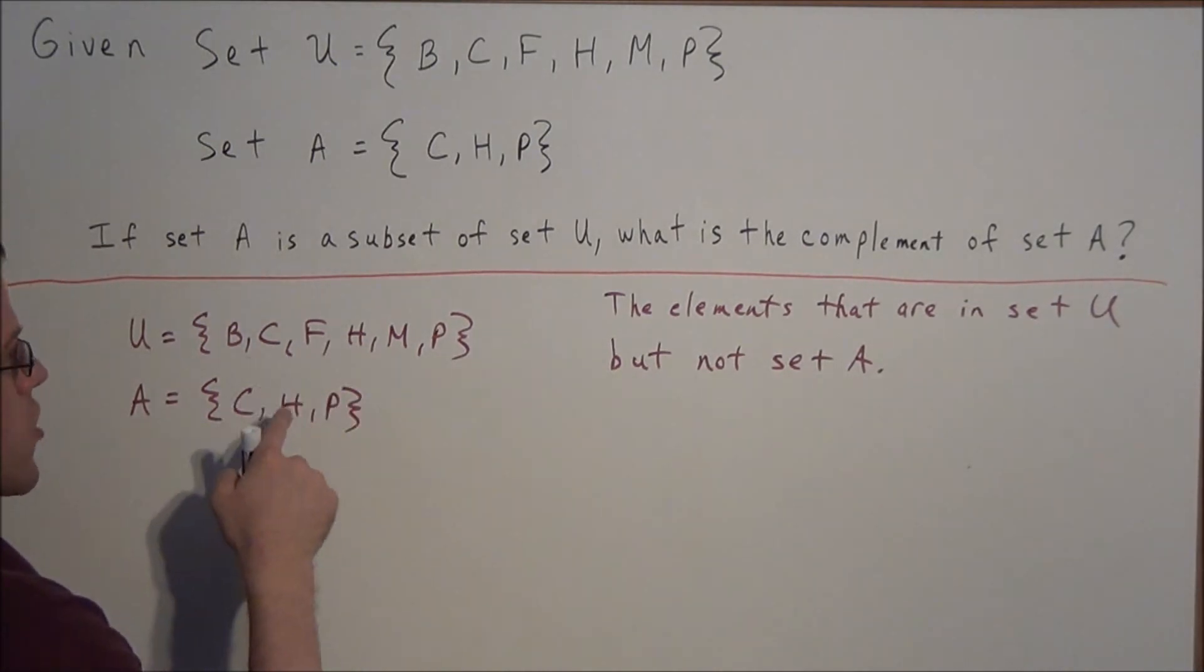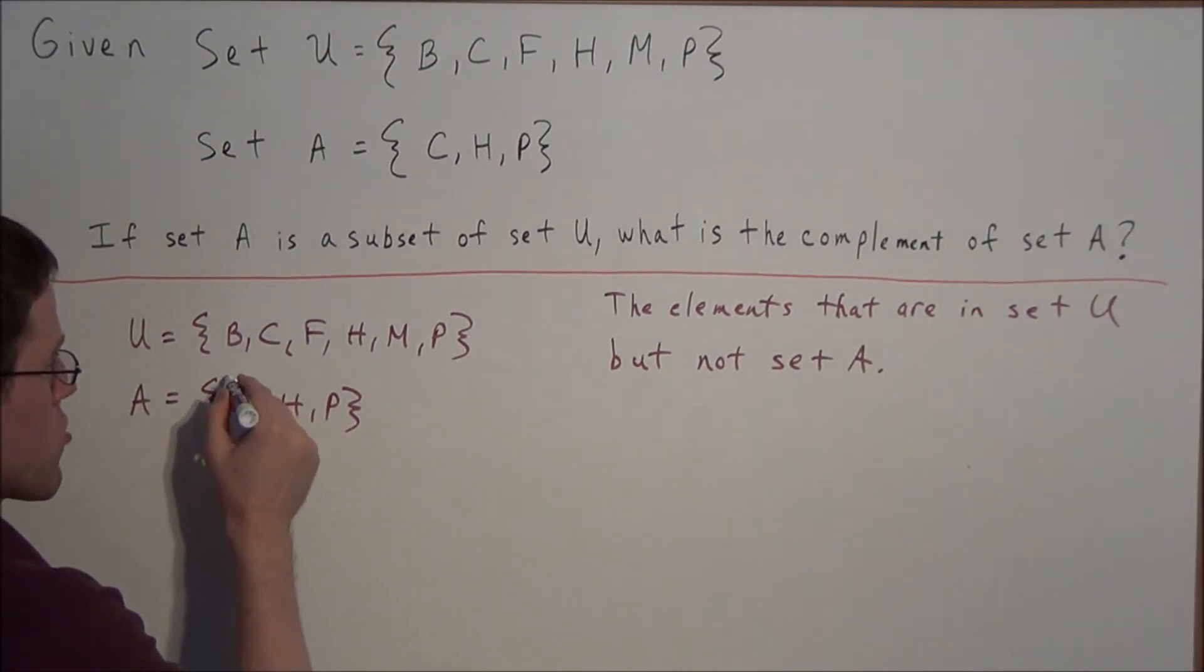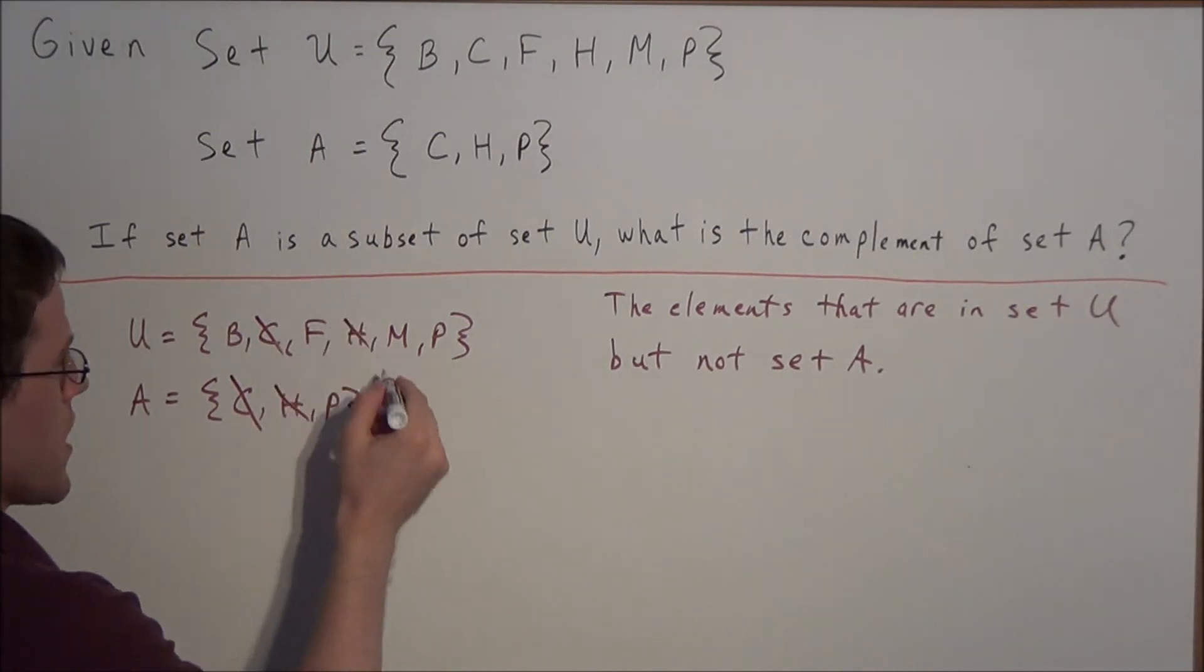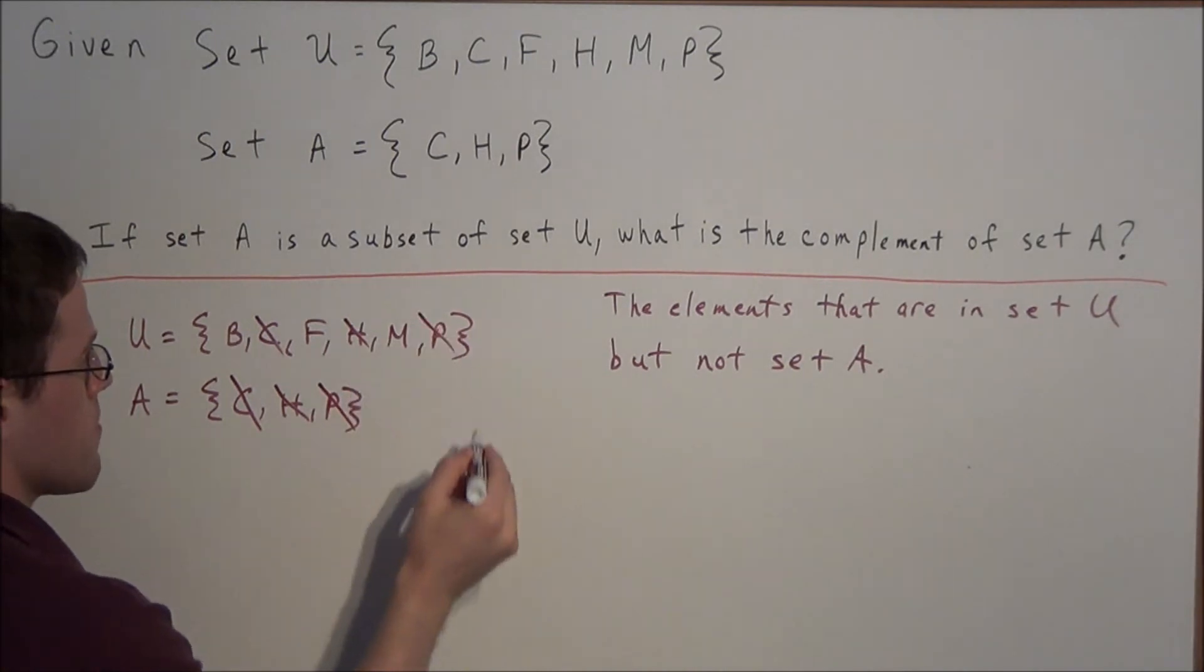So if we're looking for the elements that are in U but not set A, I like to cross off the common elements that are in both sets. So we'll cross off C and C, we'll cross off H and H, and finally we'll cross off P and P.